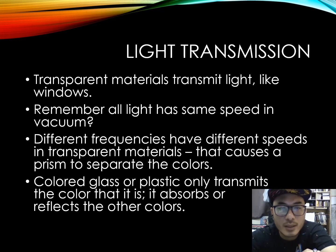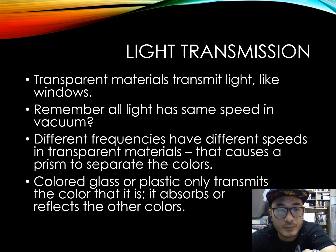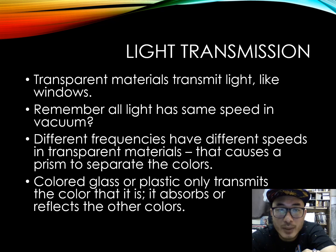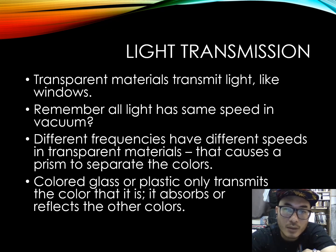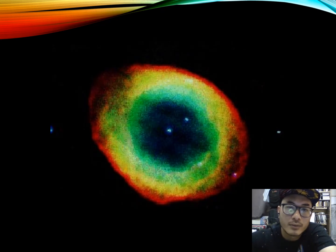Now we are going to discuss light transmission. Transparent materials transmit light, like windows. Remember, all light has the same speed in a vacuum, but different frequencies have different speeds in transparent materials. That causes a prism to separate the colours. Coloured glass or plastic only transmits the colour that it is — it absorbs or reflects the other colours.